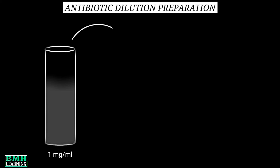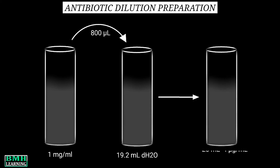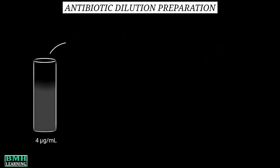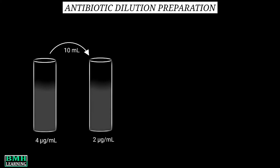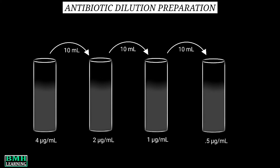For example, from the 1 mg per ml concentration, we take 100 microliters and transfer it into 19.2 ml of distilled water, giving 20 ml at a concentration of 4 micrograms per ml. From here, we perform serial double dilutions by transferring 10 ml from each tube: 4 micrograms per ml → 2 micrograms per ml → 1 microgram per ml → 0.5 micrograms per ml, and so on.